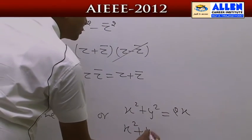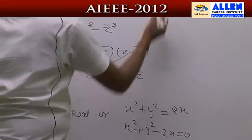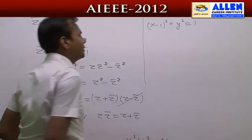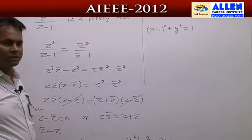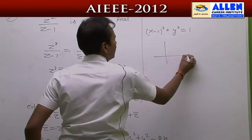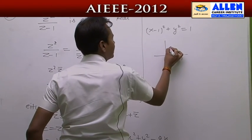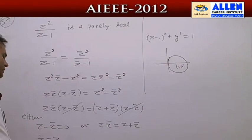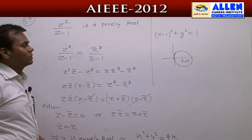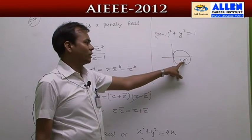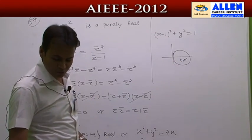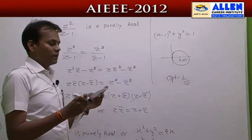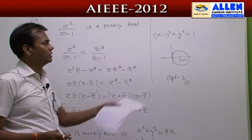From z·z̄ = z + z̄, substituting z = x + iy gives x² + y² − 2x = 0, which can be rewritten as (x − 1)² + y² = 1. This is a circle with centre (1, 0) and radius 1, which passes through the origin. So z either lies on the real axis or on this circle passing through the origin. Option 2 is the correct answer.